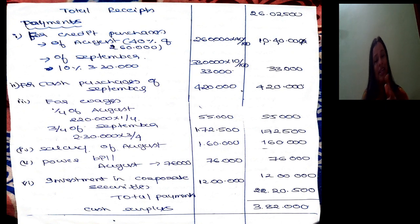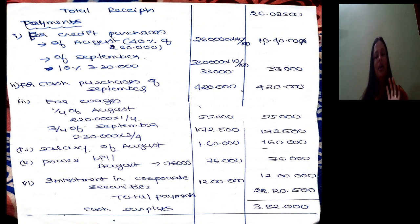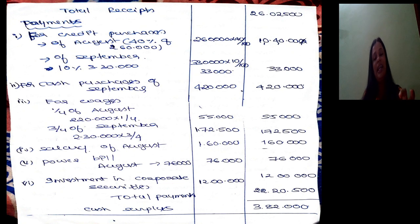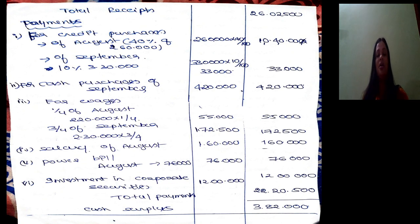Note: The August credit purchases figure is Rs 2,60,000, not Rs 26,00,000. So 40% of Rs 2,60,000 is Rs 1,04,000, and 10% of September's credit purchases (Rs 3,30,000) is Rs 33,000 — these are the amounts paid in September.